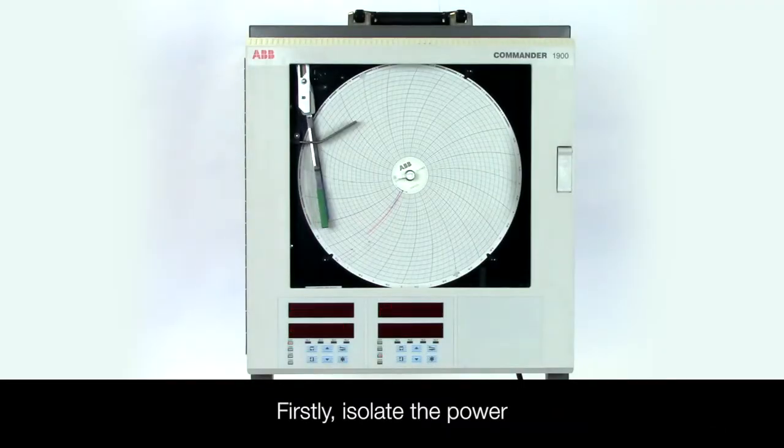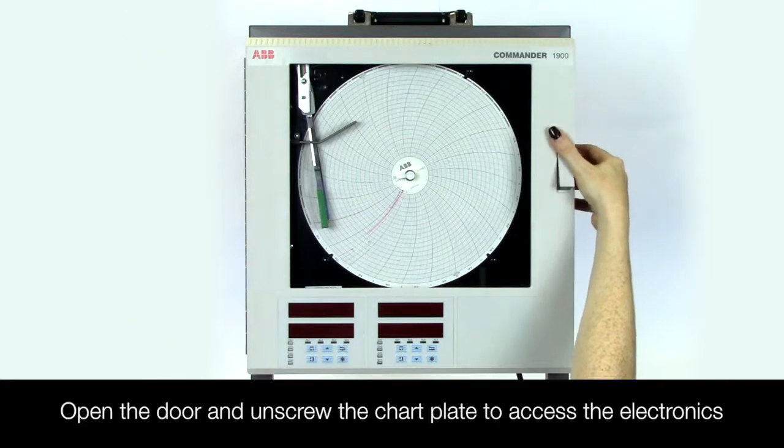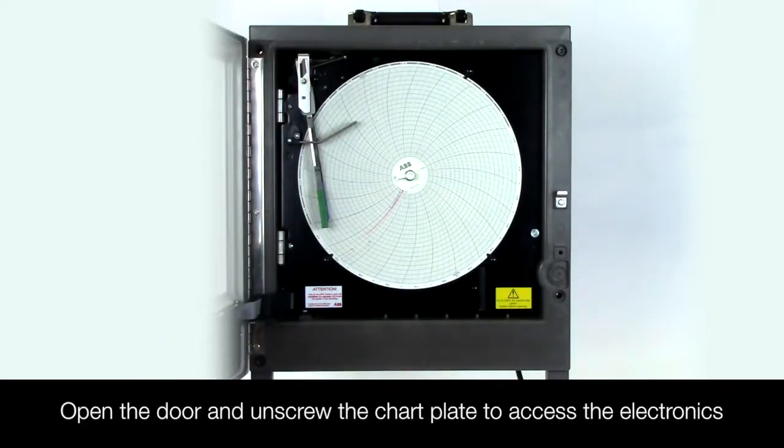First isolate the power to the C1900, open the door and undo the chart plate screw to gain access to the electronics.